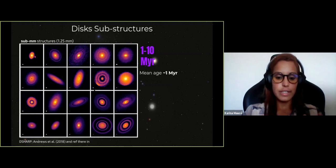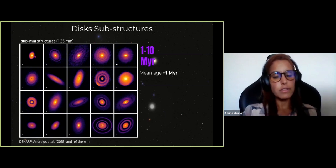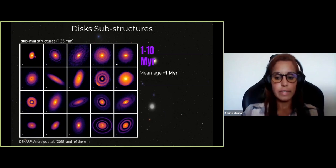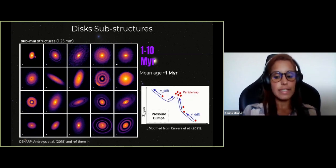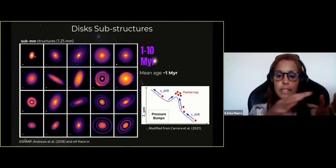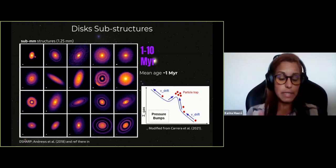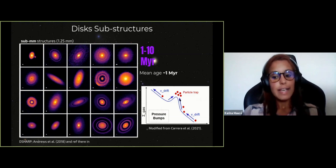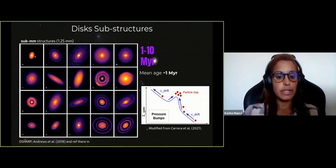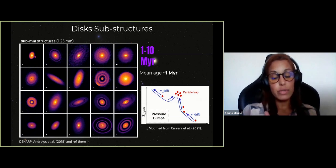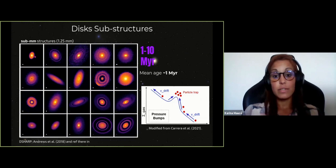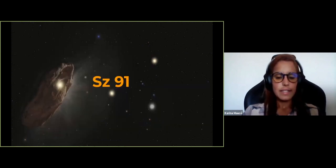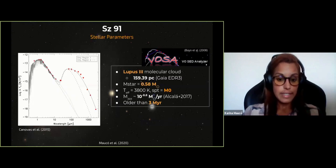We know these substructures are places where dust gets trapped and concentrated. One proposed scenario is a pressure bump: you have local maxima in the gas distribution, and particles drift and get trapped at these local maxima. These pressure bumps are now being related to planet formation, as planets are likely responsible for producing these substructures. So if you want to study planet formation, the main targets are disks with substructures and cavities — making STRAS-91 a very interesting source.